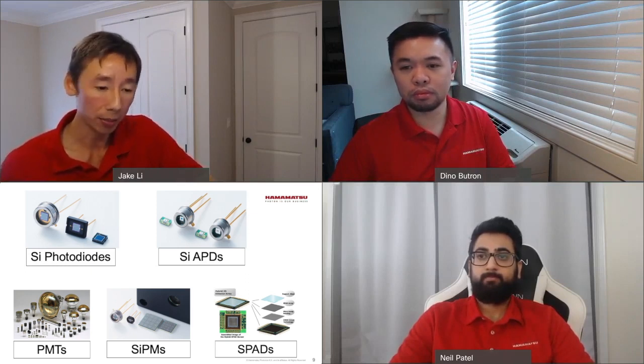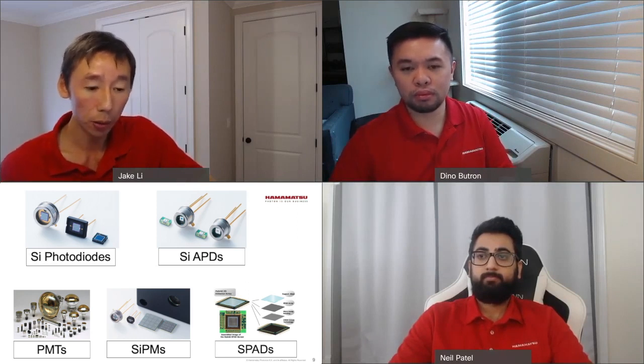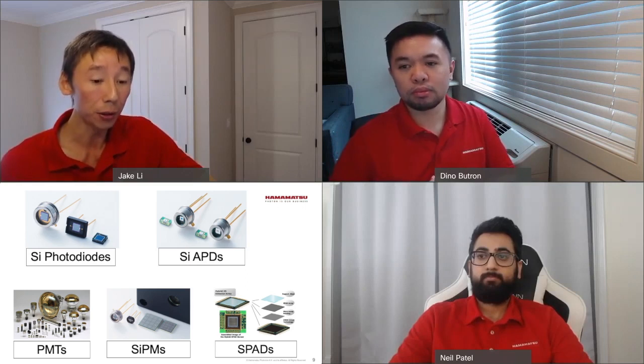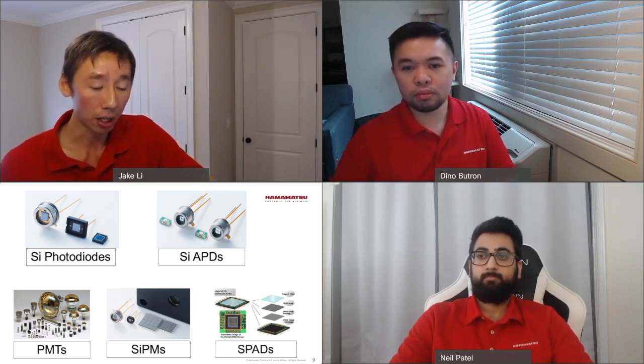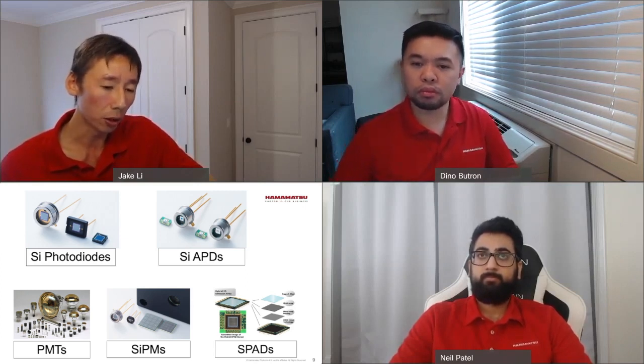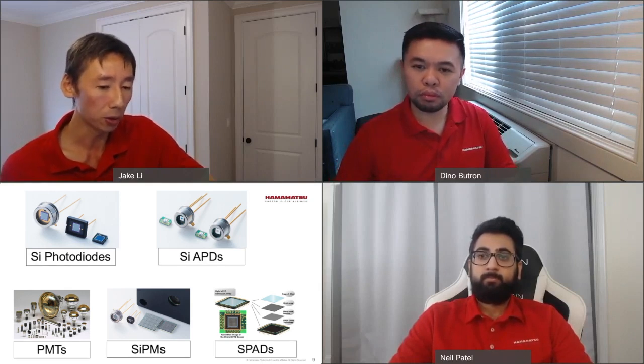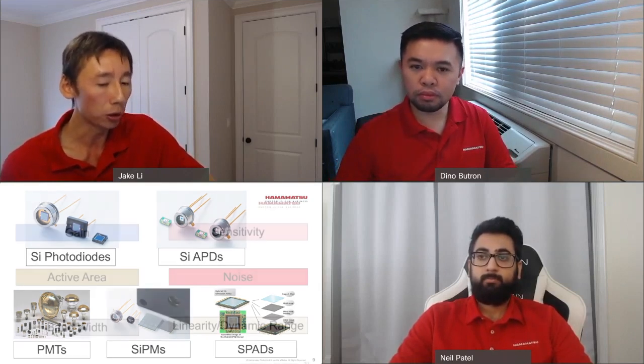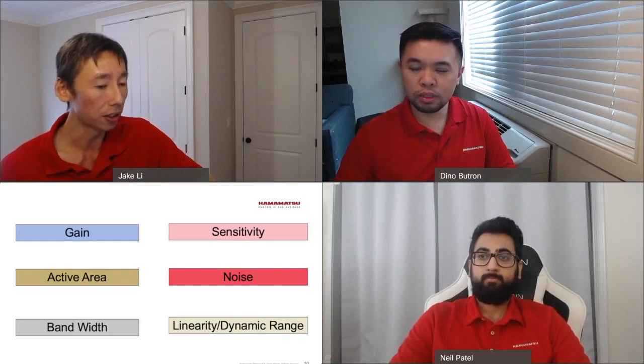That's a good number of detectors for people to select from. We've talked about PMTs, APDs, SiPMs, and SPADs — there are so many out there, so it can be confusing to know what is the best fit for a different application. What is the best way to choose the right parameters and select the right detector under different circumstances?